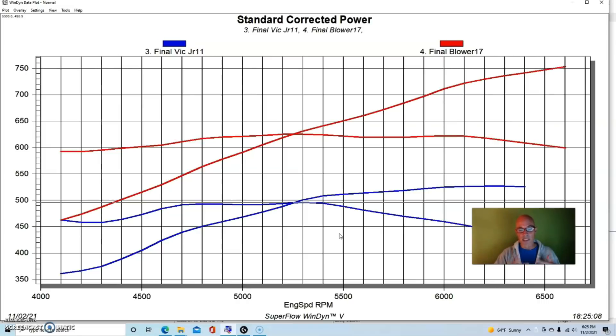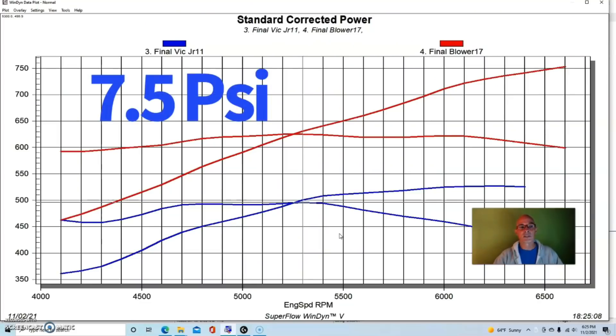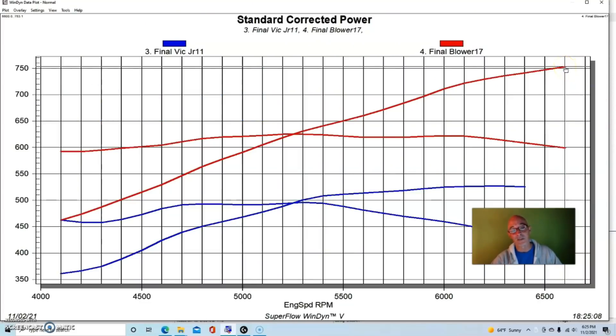We didn't run a lot of boost on this combination. We ran a pulley combination that basically produced about seven and a half pounds on this thing. This was run with race gas, not E85. With E85 we would have made even more power and we could have changed the pulleys to run the boost up.